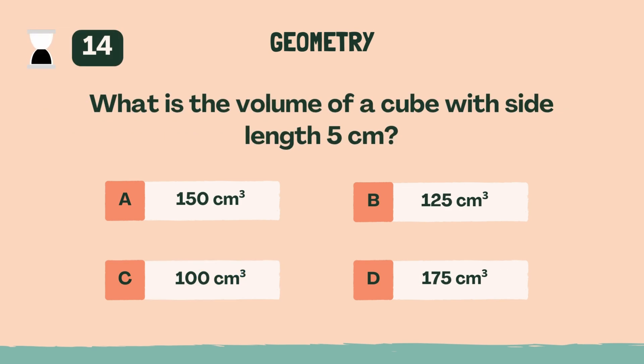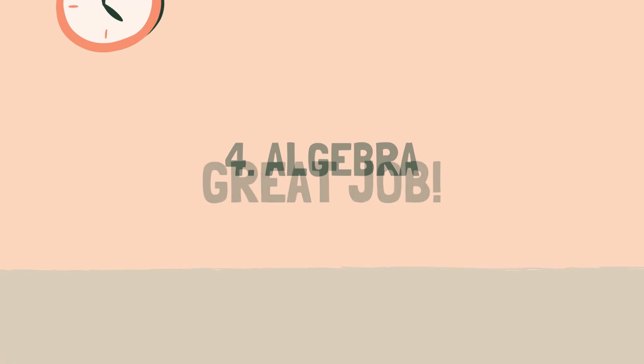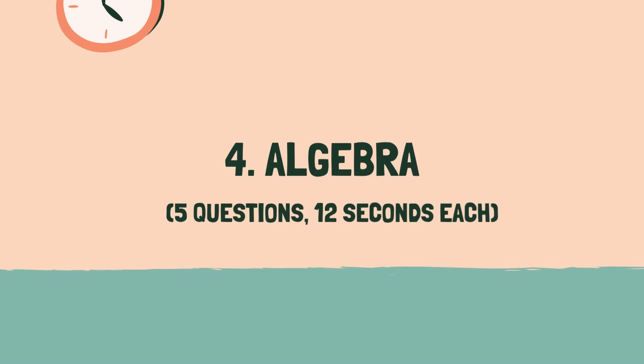What is the volume of a cube with side length 5 centimeters? B, 125 cubic centimeters. Which shape has exactly one line of symmetry and two parallel sides? C, trapezoid. Great job. Ready for some algebra? Category 4, algebra. Three, two, one, go.